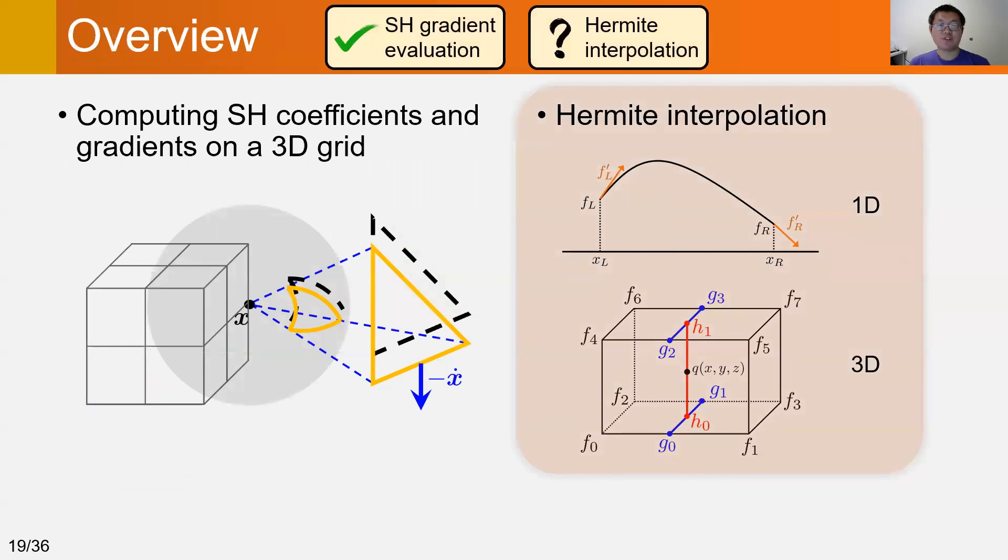After computing SH coefficients and gradients on the grid points, next, let's see how to use Hermite interpolation for any intermediate shading point.